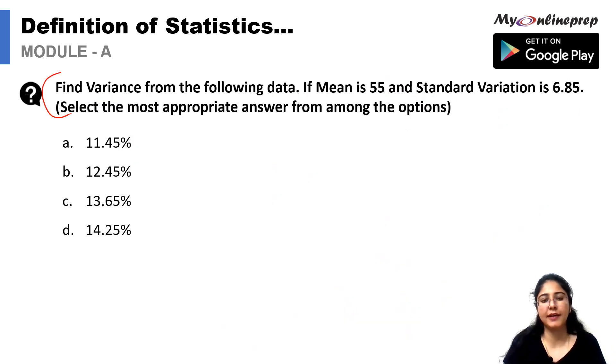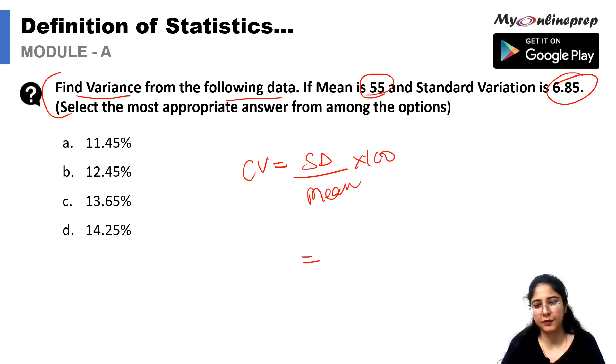In this question we have to find the coefficient of variance from the following data where mean is 55 and standard deviation is 6.85. Coefficient of variance equals standard deviation upon mean into 100, which is also the coefficient of variance. Standard deviation is 6.85 upon mean 55 multiplied by 100 gives us the answer as 12.45 percent. Option B is the correct answer. Simply we have applied the formula and got our answer.